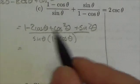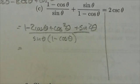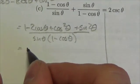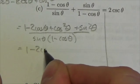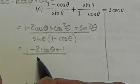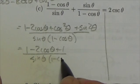Now, what we got here. Do I see any Pythagorean identities now? And yes, I do. Cosine squared plus sine squared is just 1. So now I've got 1 minus 2 cosine theta plus 1 all over sine theta times 1 minus cosine theta.